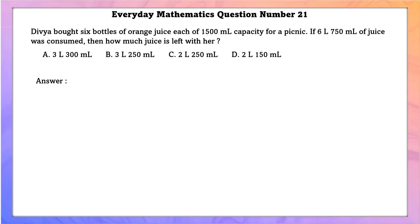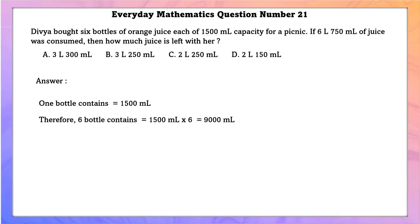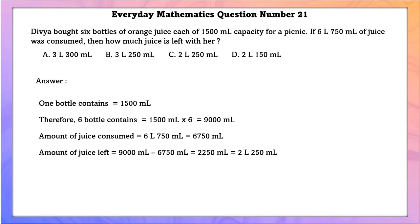Everyday Mathematics question number 21. Divya bought 6 bottles of orange juice, each of 1,500 ml capacity. Total juice is 9,000 ml. If 6,750 ml was consumed, the juice left is 2,250 ml, which is 2 liters 250 ml.